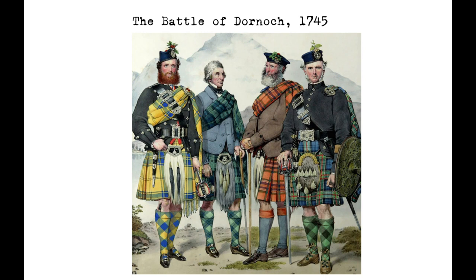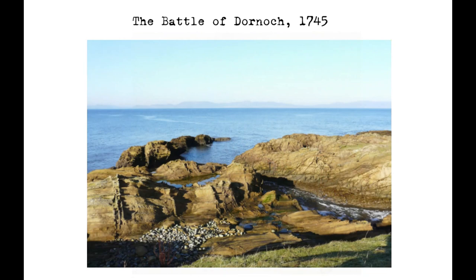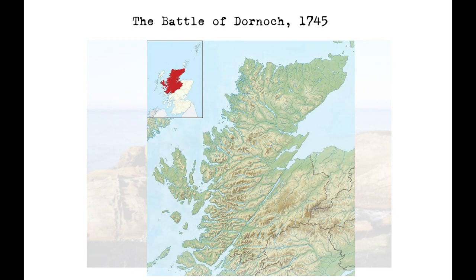The rebel advance began early in the morning of March 20 as the Jacobite Highlanders prepared to embark from the sands near Tane, across the Dornock Firth from Dornock. The first division to embark consisted of clan Fraser of Lovat and clan Gregor. They landed at Meekle Ferry and immediately marched towards Skibbo Castle in an attempt to capture Duncan Forbes, Lord Culloden, and Norman MacLeod, Laird of MacLeod.